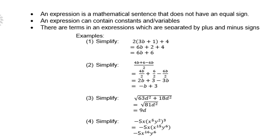Examples, simplify 2(3b + 1) + 4, so what do we do? We first multiply 2 with 3b and 2 with 1, and then we collect the like terms, 2 plus 4 is 6. When we divide (4b + 6 - 6b) / 2, we can divide 2 into 4b, 2 into 6, and 2 into 6b. And then we get 2b + 3 - 3b. Then we can collect the like terms, 2b - 3b is -b + 3.